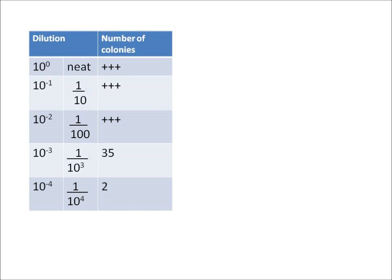So here's my results table and you can see that I've written the dilutions in two different ways, both as we tend as microbiologists to write them - 10 to the minus 1, 10 to the minus 2 - but also as a fraction. So the 10 to the minus 1 dilution is a 1 in 10 dilution, the 10 to the minus 2 dilution is a 1 in 100 dilution, and so on.